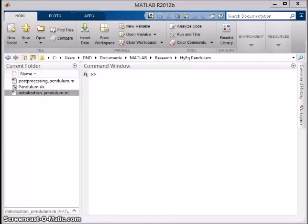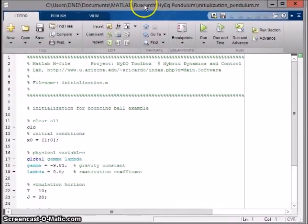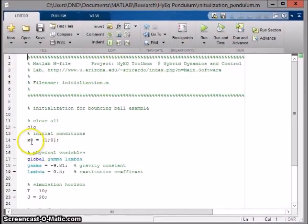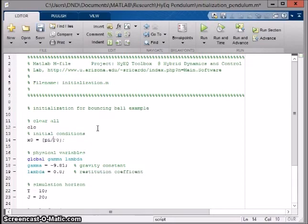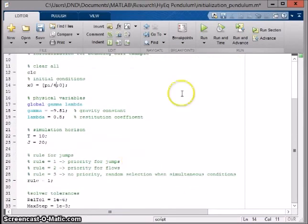Open Initialization Pendulum. We'll need to make one edit to it. X0 has the initial value of theta and theta dot. Change the initial value for theta to pi over 4, corresponding to an initial value of 45 degrees with the vertical. This is the only change we'll have to make to the Initialization Pendulum and post-processing is already ready.